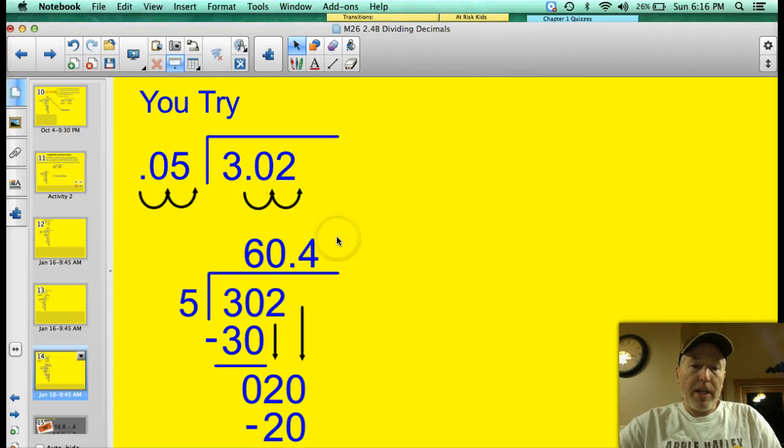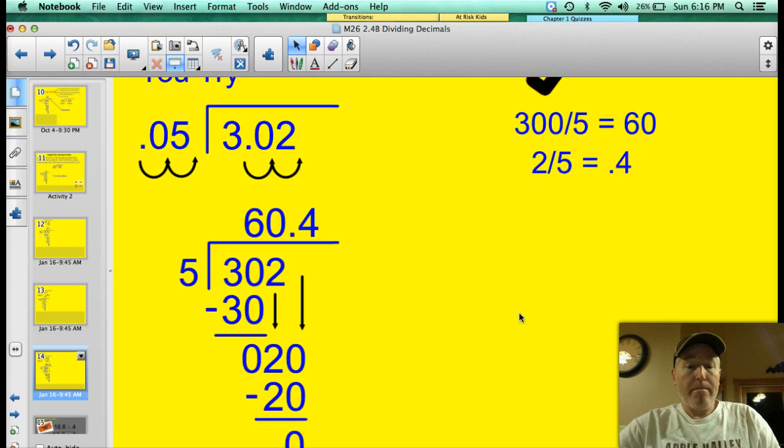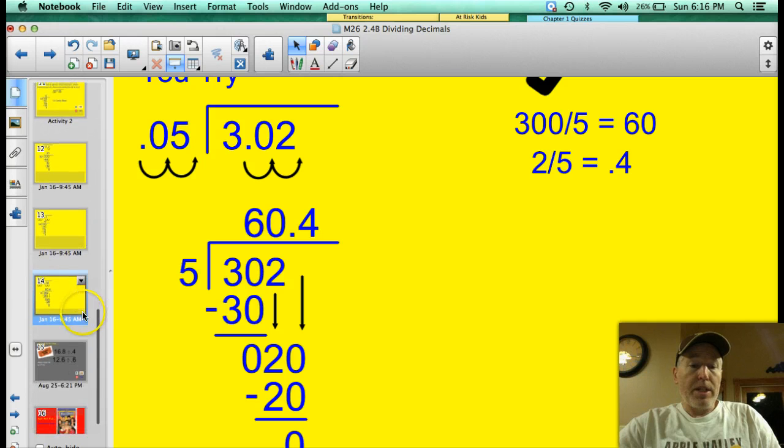Like I said, once you get that decimal moved in the divisor and then move it in the dividend, the same number of places, you're really just dividing like normal. Let's just check to see if your answer makes sense. Well, we know that 300 divided by 5, of course, is 60. And 2 divided by 5, that's a known fraction of 0.4. So there's my 60.4 right there. Alright, you are ready for the ticket to the show.